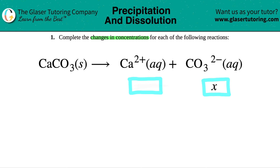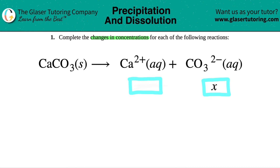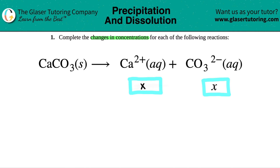In this question, they already told us that the carbonate ion is going to change by a variable x. Now, if carbonate is going to change by x, what is the calcium going to change by? Is it going to change by x, 2x, 3x — what is it?